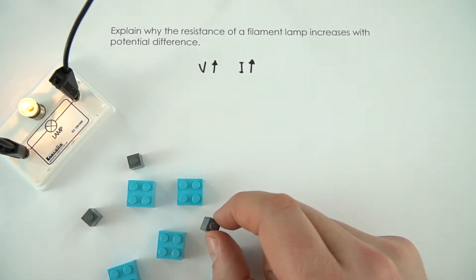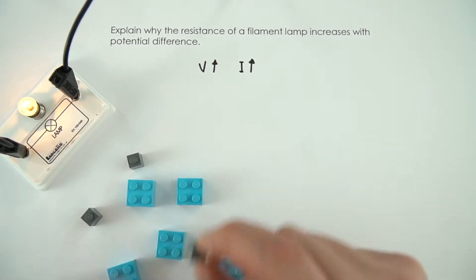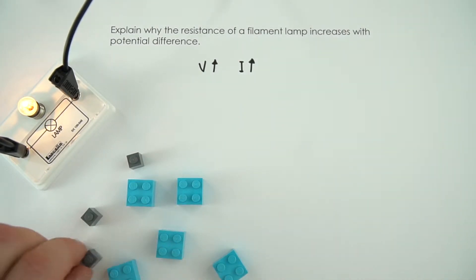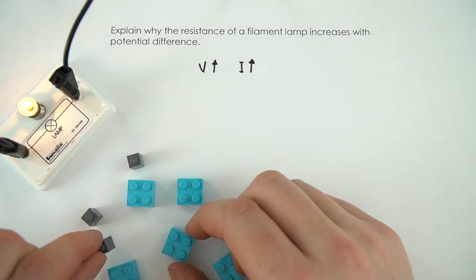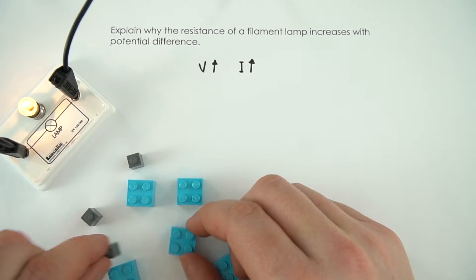So why does that cause the resistance to increase? Well, as these electrons are moving past, they're going to start maybe occasionally knocking into the metal lattice. And what happens then is that this causes the metal lattice to start to vibrate a little bit more.